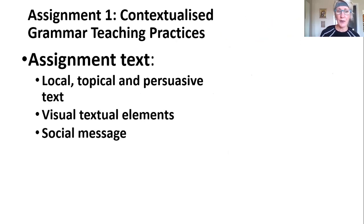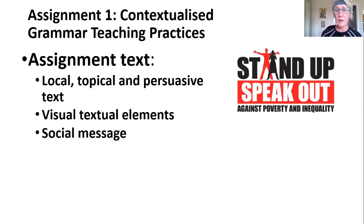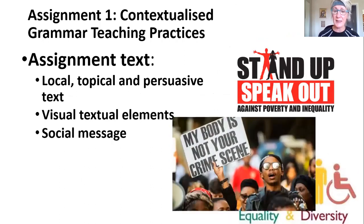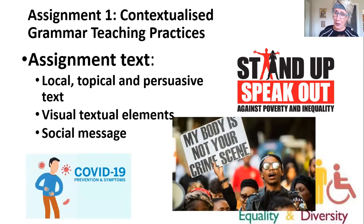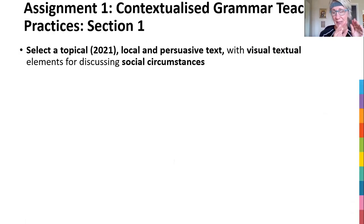Let's look at assignment one. We're going to go through this looking at the text first. The first thing you want to do is go and choose a text. It's local, it's topical, it's interesting, it's persuasive. There's a visual element to it — a picture, a cartoon, a graph, something that's visual — and there is a social message. Speaking out against poverty and equality, equality and diversity, these are all social topics. 'My body is not your crime scene,' COVID injections, jabs, sanitizing, mask wearing — all those things. So you'll select your topic that's persuasive, that's got a visual element, that's making a social comment.